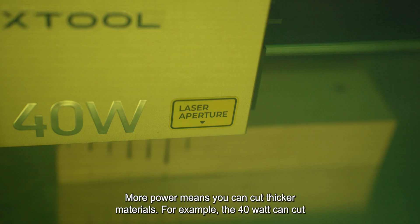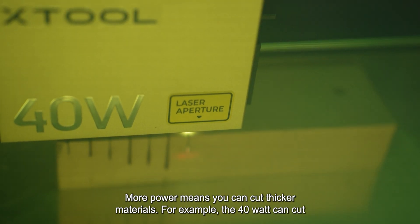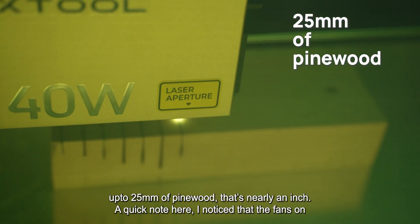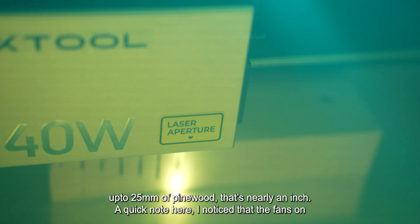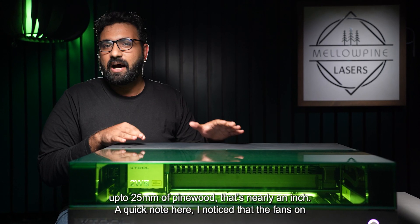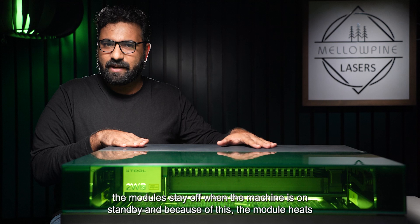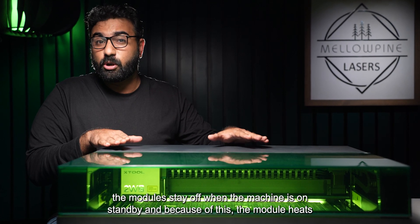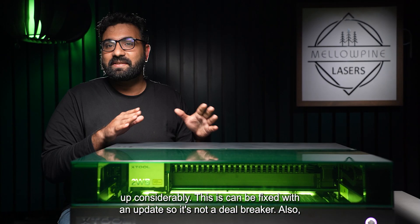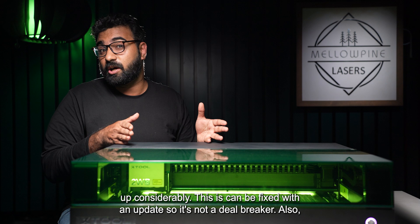More power means you can cut thicker materials. For example, the 40 watt can cut up to 25 millimeter of fine wood. That's nearly an inch. A quick note here, I noticed that the fans on the module stay off when the machine is on standby. And because of this, the module heats up considerably. This can be fixed with an update, so it's not a deal breaker.